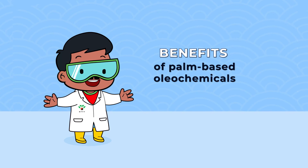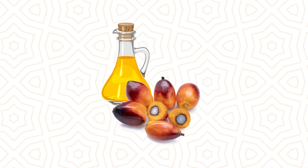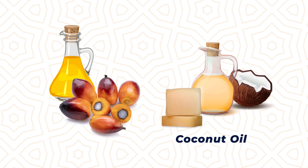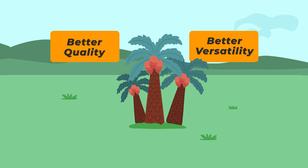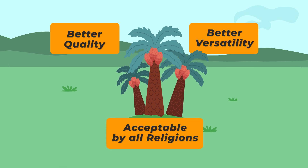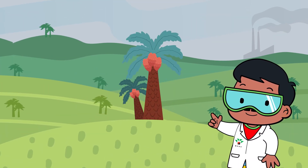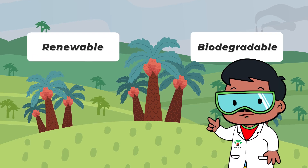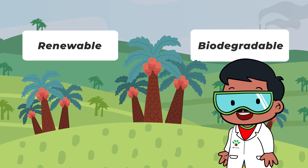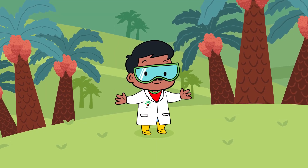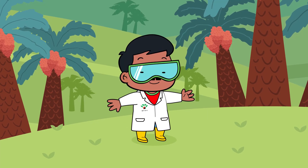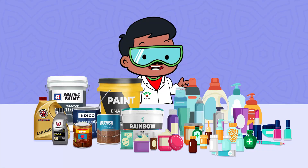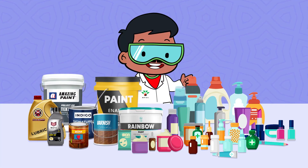Palm-based oleochemicals are fatty acids from palm oil and palm kernel oil that can readily substitute tallow and coconut oil respectively. Other established advantages include better quality, versatility, and as a vegetable oil, palm-based oleochemicals are acceptable by all religions. Moreover, they are renewable and biodegradable, ensuring cleaner waste disposal and contributing towards a healthy environment. In conclusion, palm oil and palm kernel oil, with their various advantages, are more versatile and biodegradable, strategically positioned to fulfill demand from the oleochemical industry. The many applications of palm-based oleochemicals once again prove the versatility of palm oil.